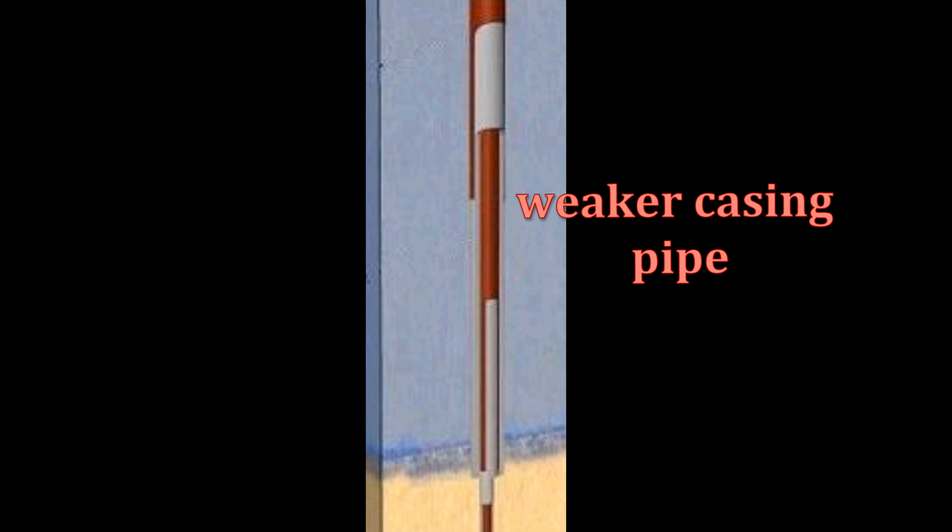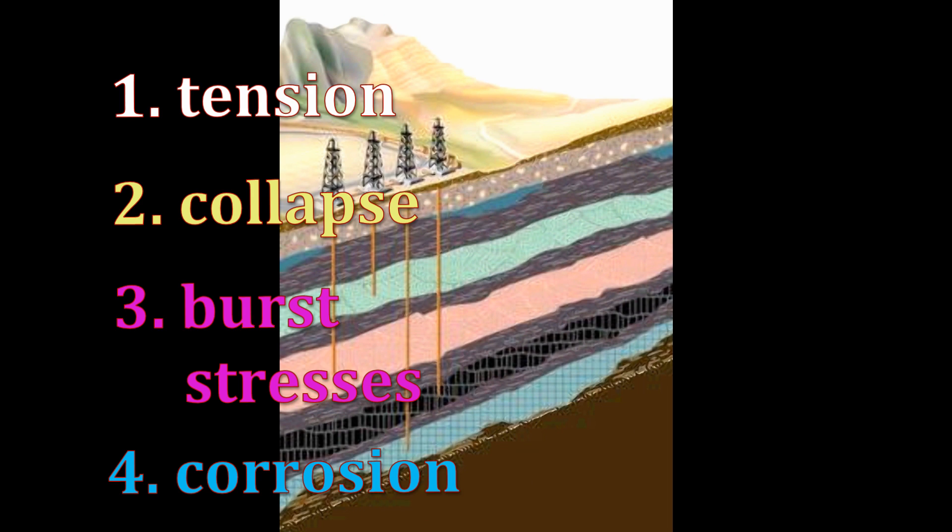The weaker casing pipe is usually in the middle of the string. The fourth is corrosion.